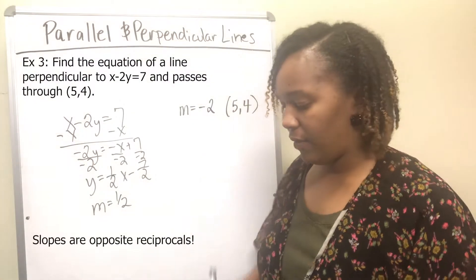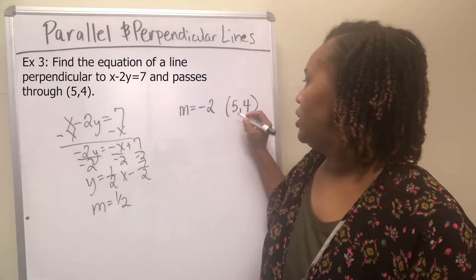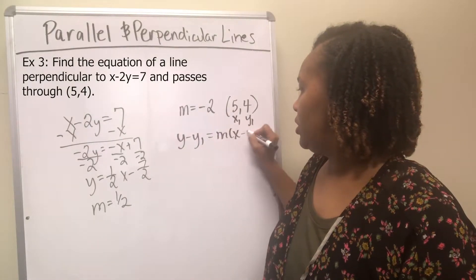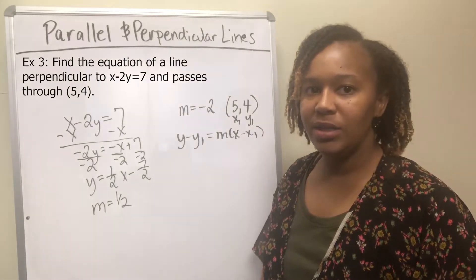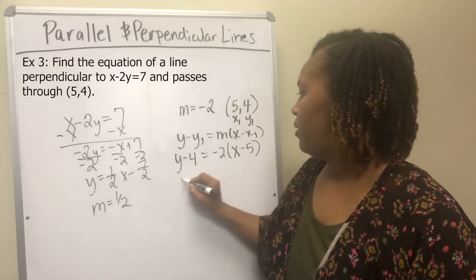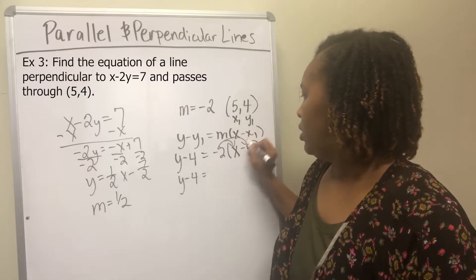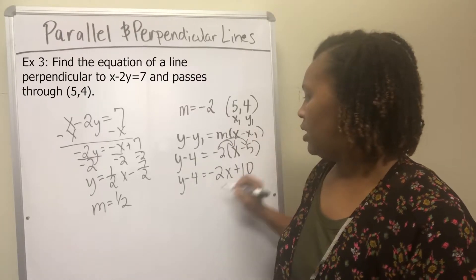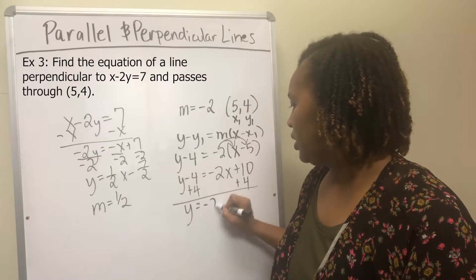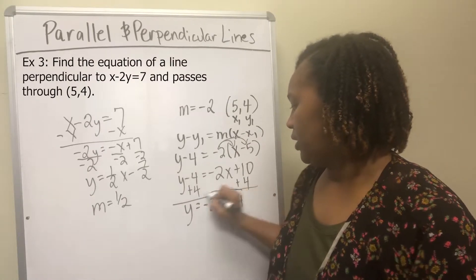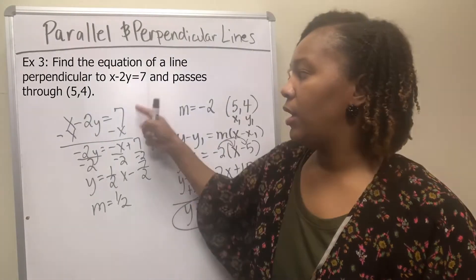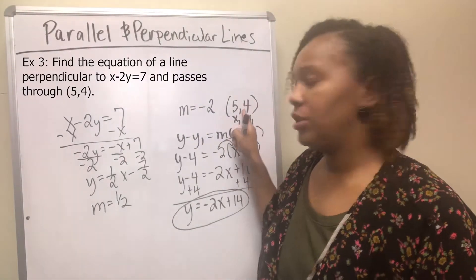Using point (5, 4) as x₁, y₁ and slope negative 2 in point-slope form: y − 4 = −2(x − 5). Distributing the negative 2 gives negative 2x + 10. Adding 4 to both sides: y = −2x + 14. That is the slope-intercept form of the equation of the line perpendicular to x − 2y = 7 passing through (5, 4).